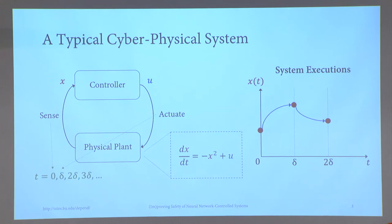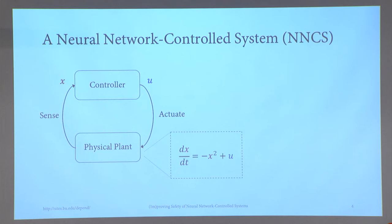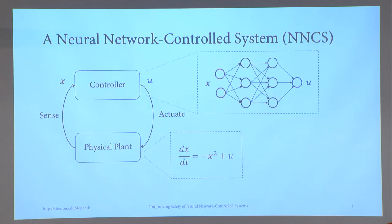In neural network control systems, we are simply replacing the traditional controller — typically designed using classical control laws — with a neural network.